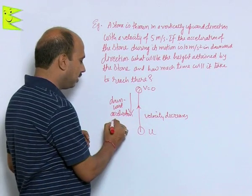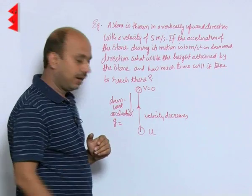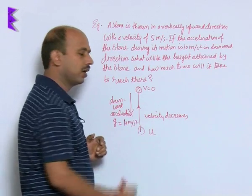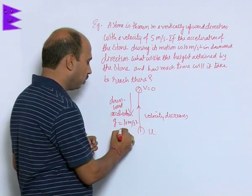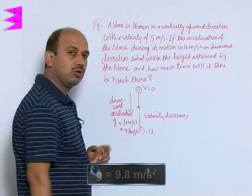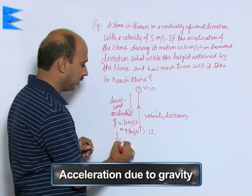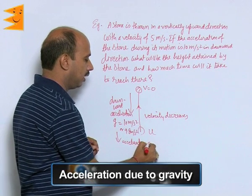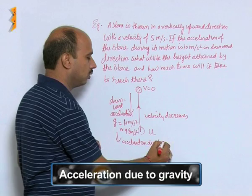This downward acceleration is represented by g and its value is constant. We take 10 meter per second square or we can write also 9.8. This is also known as acceleration due to gravity.